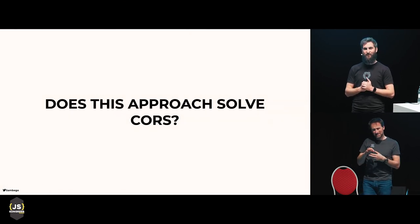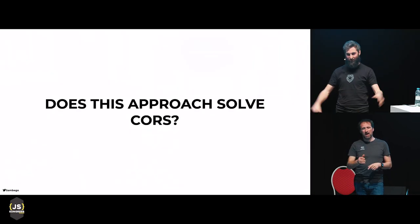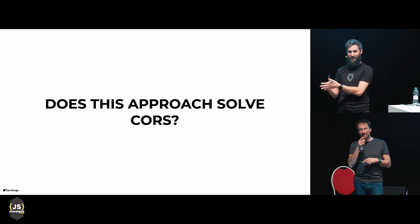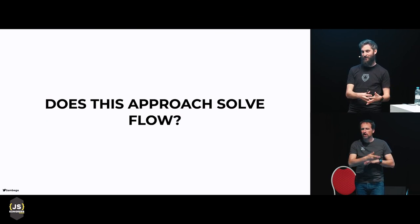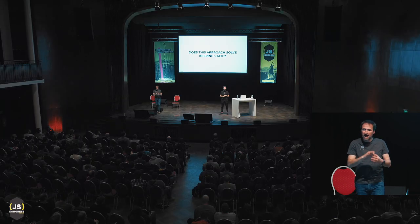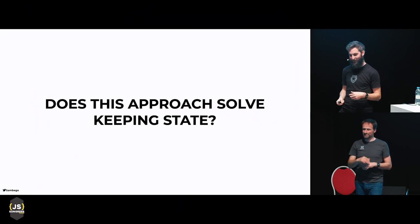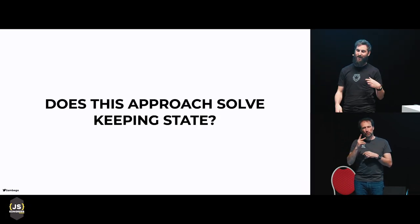Does this approach solve CORS? It does, because you can pass tokens to any other origin as long as you know the secret or key to verify its signature. Does it solve flow? It does — you can pass along tokens to any other server or service. Does it solve keeping state? In theory, JSON Web Tokens should solve state, but then you get to some security loopholes — like needing to create a blacklist for revoked tokens, or issuing new tokens every time the user visits, which is essentially a session cookie.